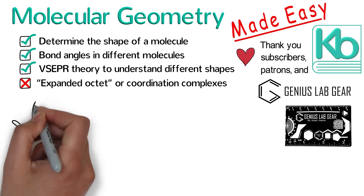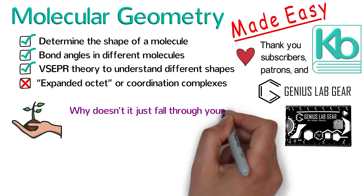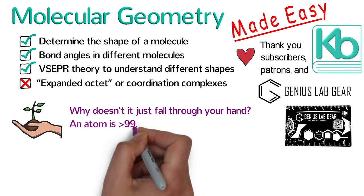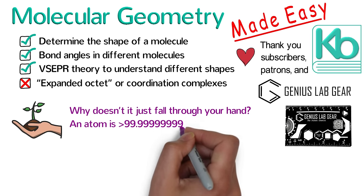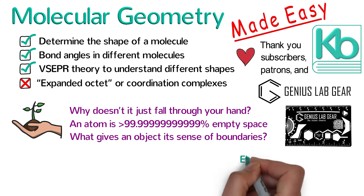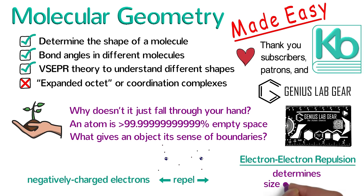But first, I would like to ask a fascinating question. Why are you able to hold something in your hand? Why doesn't it just fall through your hand? Remember that atoms are mostly empty space — and by mostly I mean that an atom is more than 99.999999999% empty space. It is highly unlikely that the protons, neutrons, or electrons of the atoms in different objects will actually touch. So if they aren't touching, what gives an object its sense of boundaries? Electron-electron repulsion. When an atom approaches another atom, the negatively charged electrons of the two atoms repel each other. So the size and boundaries of an atom are determined by electrons repelling each other.